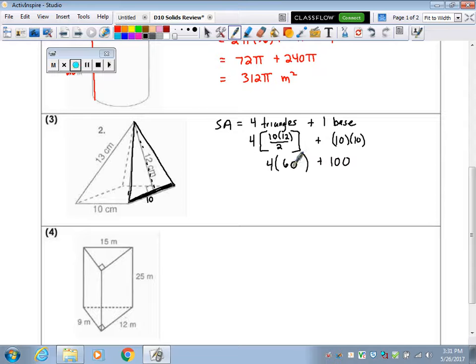And there's four of those triangles, so that's 240 centimeters squared. This 13 right here, this is one of the edges of the pyramid. And that's a decoy number. That doesn't come into play.